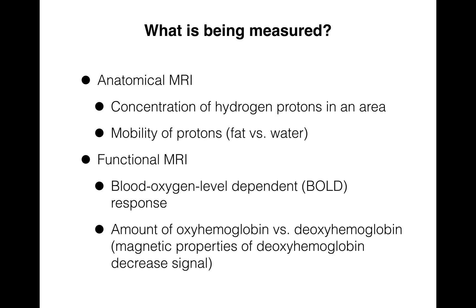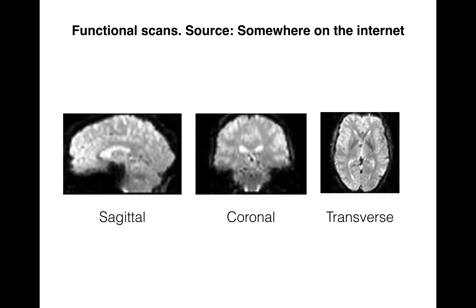In contrast, functional MRI is tuned differently so that you can pick up what's called the BOLD response — the blood oxygen level dependent response. This signal is sensitive to the relative amount of oxyhemoglobin and deoxyhemoglobin. When blood is oxygenated versus deoxygenated, we can detect that difference because the magnetic properties of the deoxyhemoglobin decrease the scanner signal. The functional scans — sagittal, coronal, and transverse — are a little fuzzier looking than the anatomical scans because they're designed to pick up the blood flow perfusing the brain.